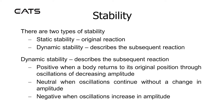Dynamic positive stability is when a body returns to its original position through oscillations of decreasing amplitude. Dynamic neutral stability is when oscillations continue without a change in amplitude. Dynamic negative stability is when oscillations increase in amplitude.